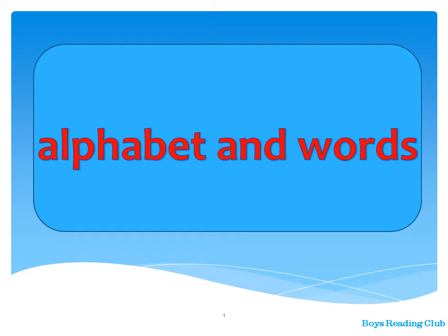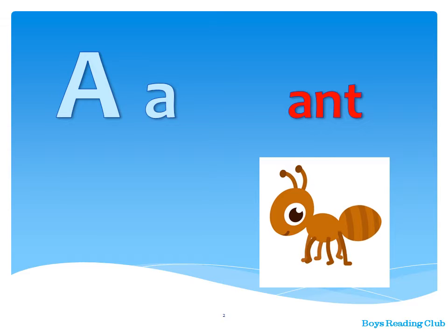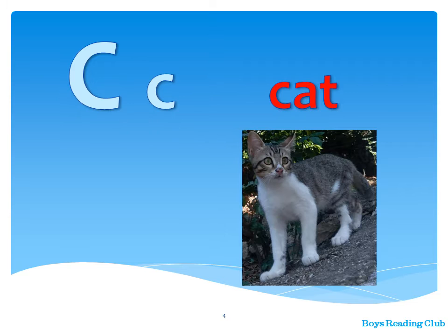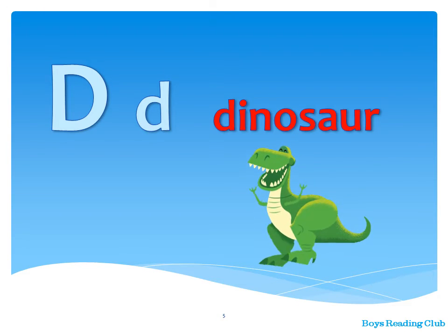Alphabet and words. A — Ant. B — Bear. C — Cat. D — Dinosaur.